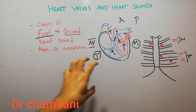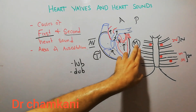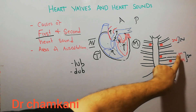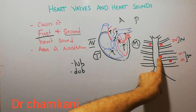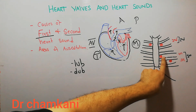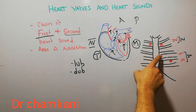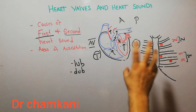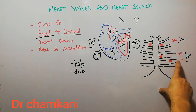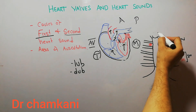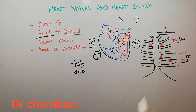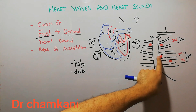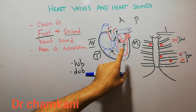The first heart sound — the 'lub' sound — due to the mitral and tricuspid valves is heard in the fourth and fifth intercostal spaces. The tricuspid component of the first heart sound will be heard in the fourth intercostal space just adjacent to the sternum. The mitral component of the first heart sound will be heard in the fifth intercostal space in the mid-clavicular line.